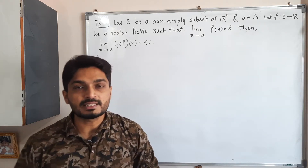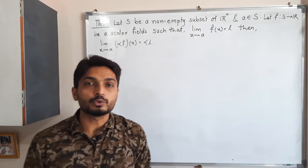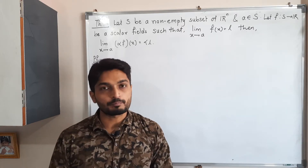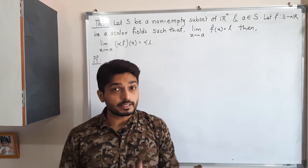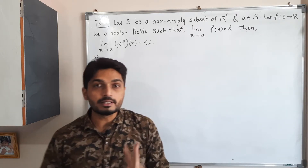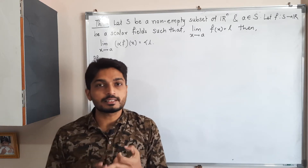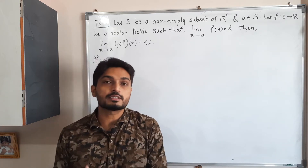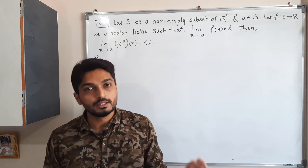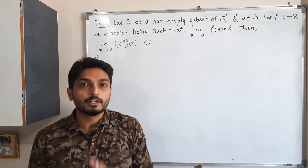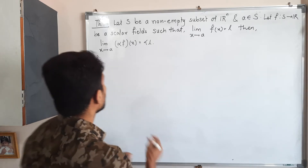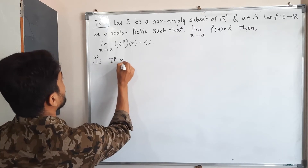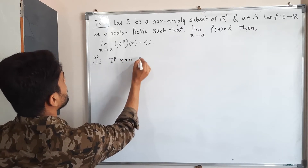The proof is quite simple — we just use the definition of the limit of a function. We discuss two cases: the first case is alpha equals zero, and the second case is alpha not equal to zero.